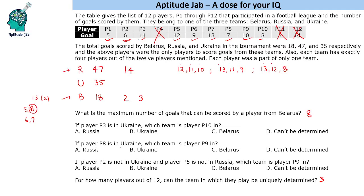Now the condition-based questions. If player P3 is in Ukraine, which team is player P10 in? P3 is the player with 11 points. If we include this 11-point player in Ukraine, the two Russia combinations involving 11 (13+11+9 and 12+11+10) are eliminated. That leaves only 13+12+8 for Russia. P10 has 8 points, so this player has to be in Russia.